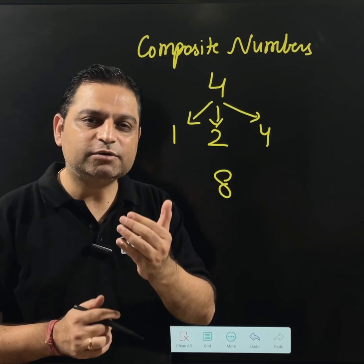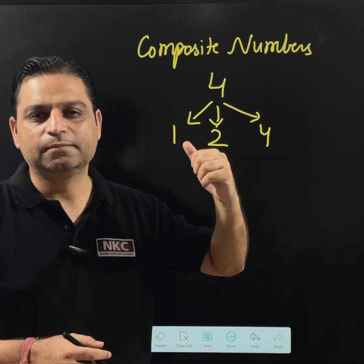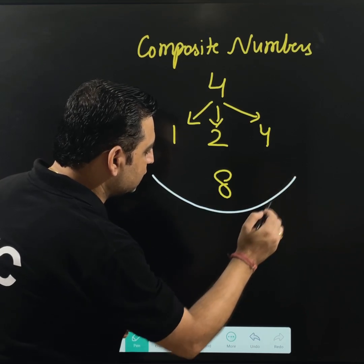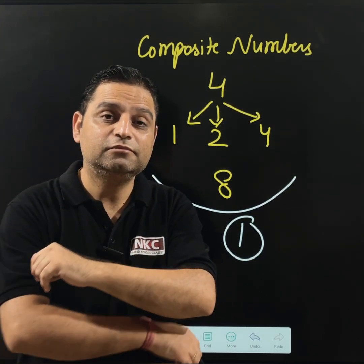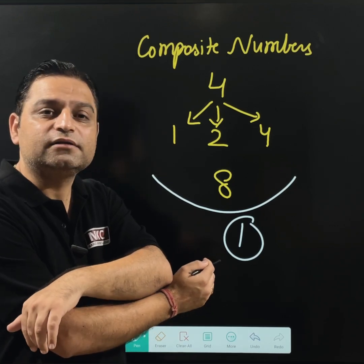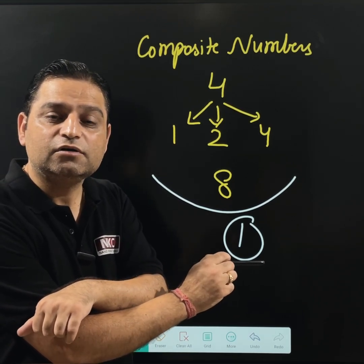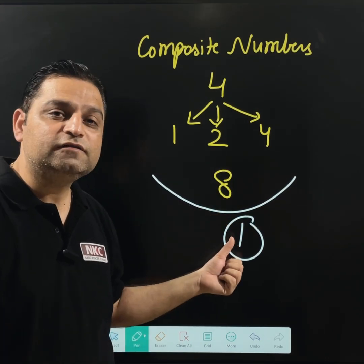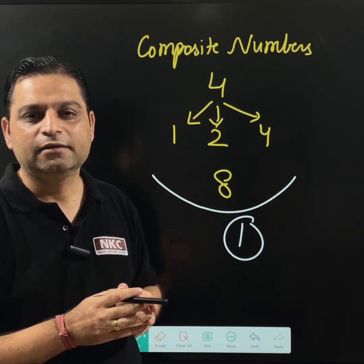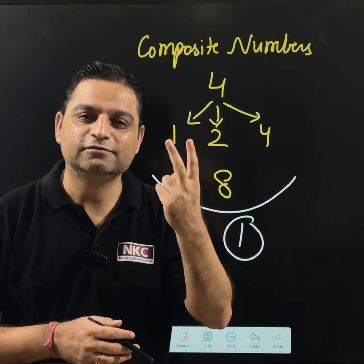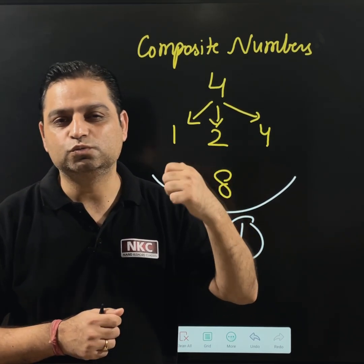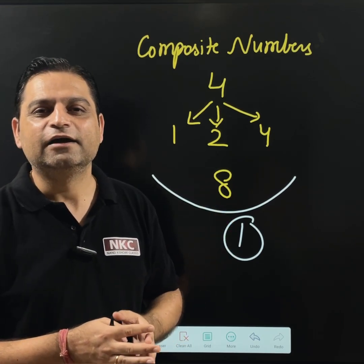I hope you are clear with the difference between prime, twin primes, and composite. Now, the big question arises which most students get wrong: what about the number 1? Is 1 prime or not? 1 is neither prime nor composite because it does not satisfy any of those definitions. Prime numbers are those which have 2 factors, whereas 1 has only 1 factor. That is why 1 cannot be prime. Prime numbers start from 2. So 1 is just a unique number. I hope you are clear with the concept.